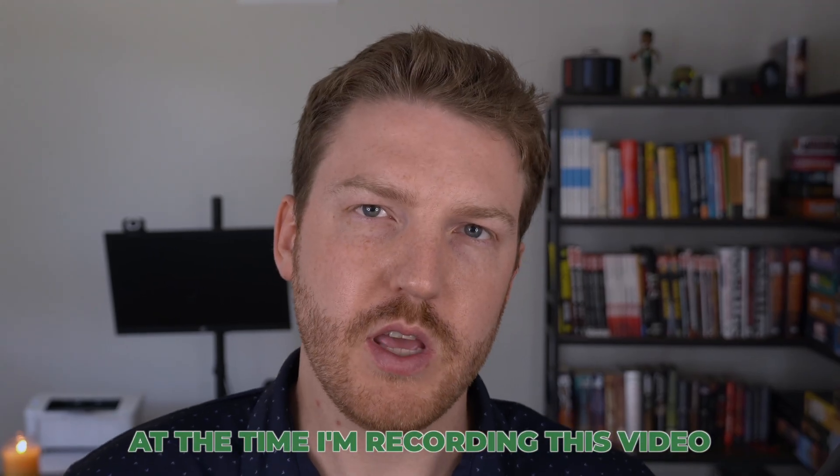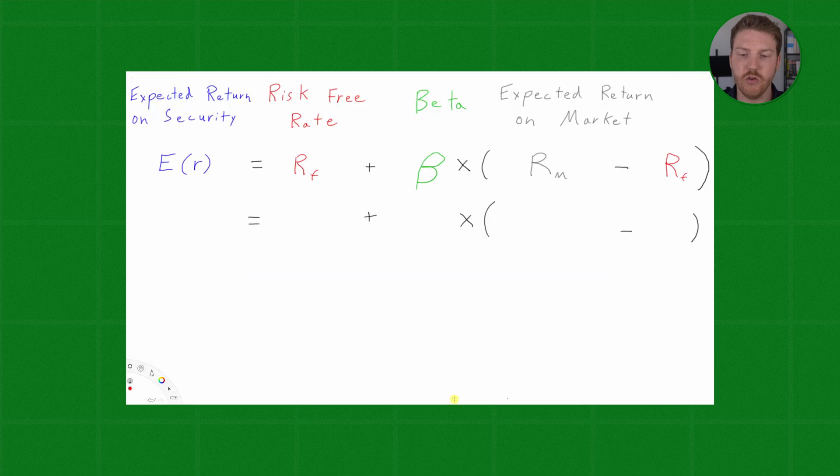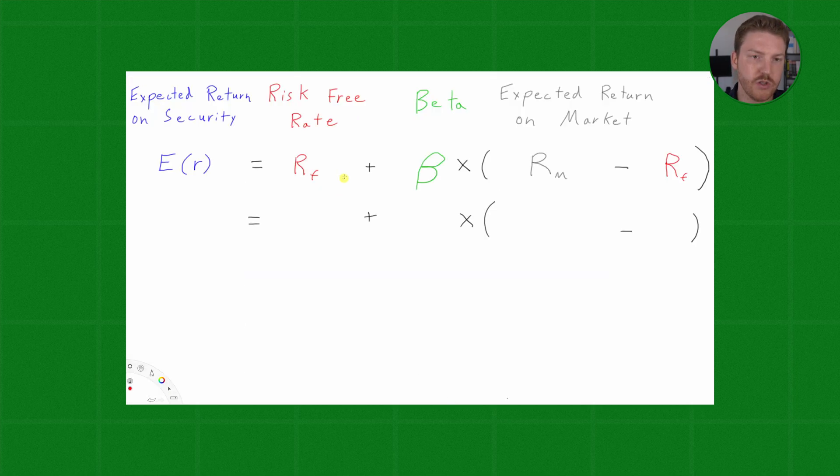At the time I'm recording this video, the return on the 10-year treasury is 4.14%. So, in our CAPM model, why don't we pencil in 4.1% for the risk-free rate?